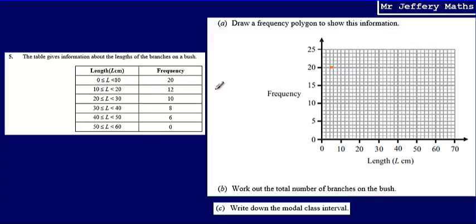Then for 10 to 20, same thing. Go to the midpoint of 10 to 20, so halfway between them, and mark a point on 12. Then 20 to 30 with 10, so halfway up and then up to 10.